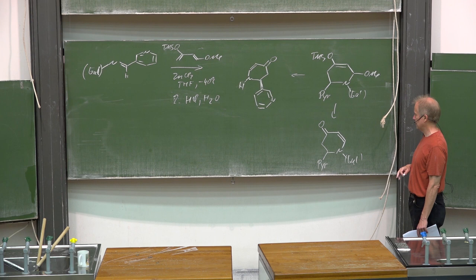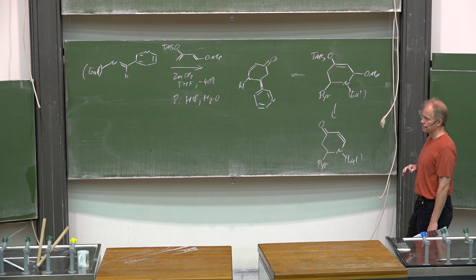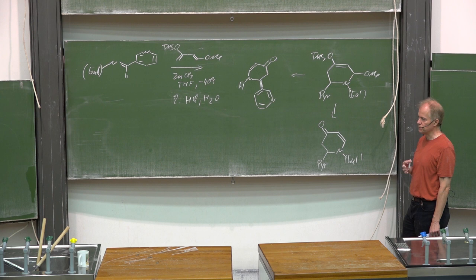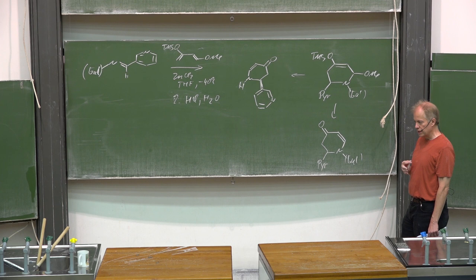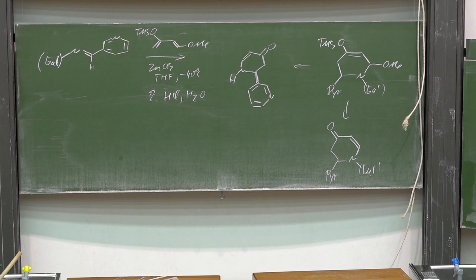This was the last example for a chiral auxiliary, but related to that kind of chemistry and also making use of carbohydrates is a nice way for the enantioselective epoxidation developed by Yian Shi. It is called the Shi epoxidation and it is based on dioxiranes as oxidizing agents.